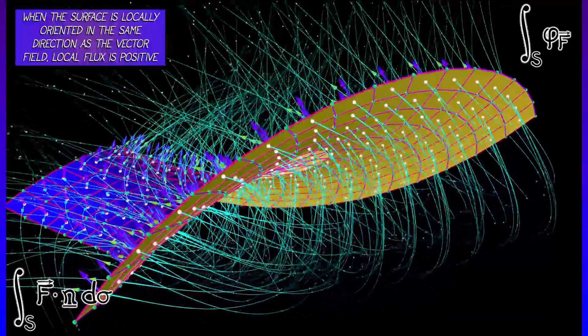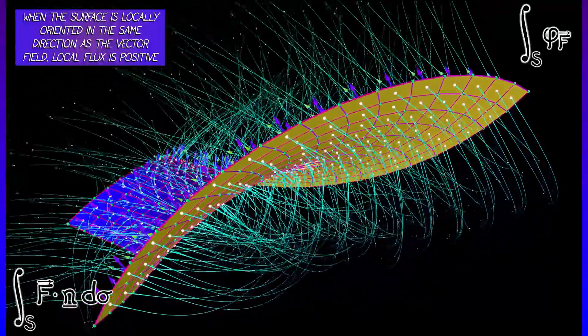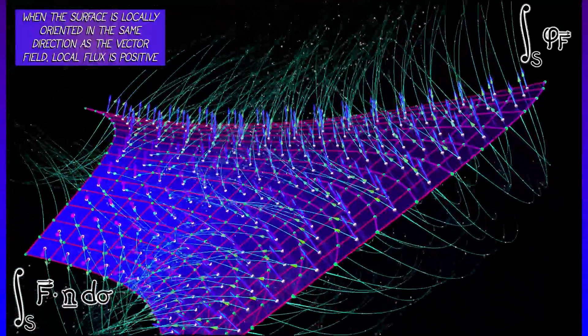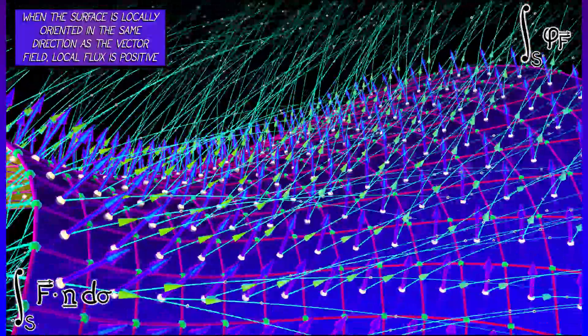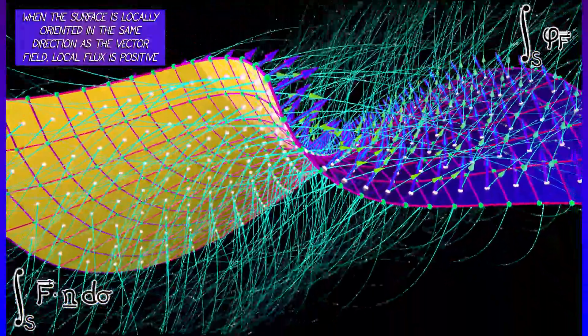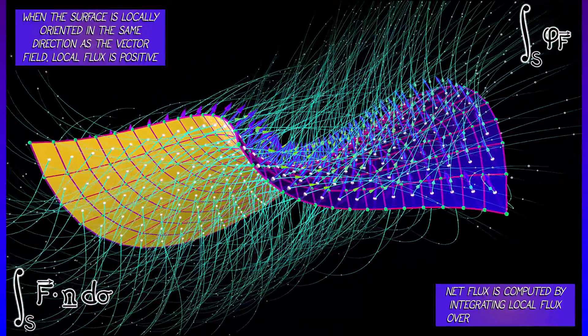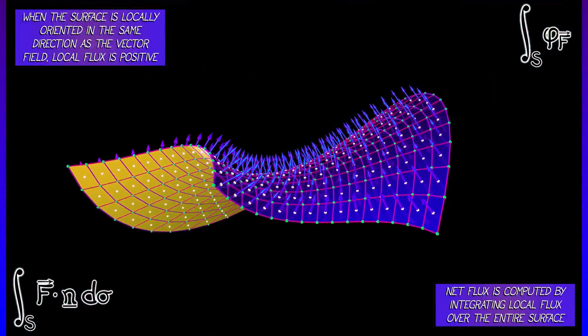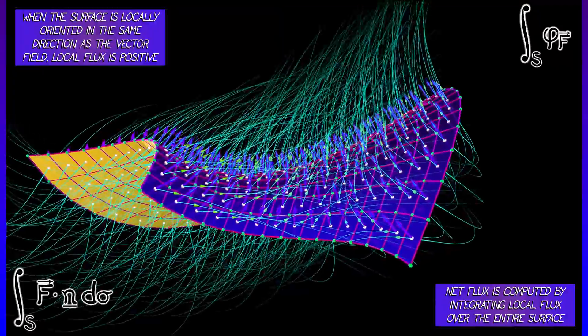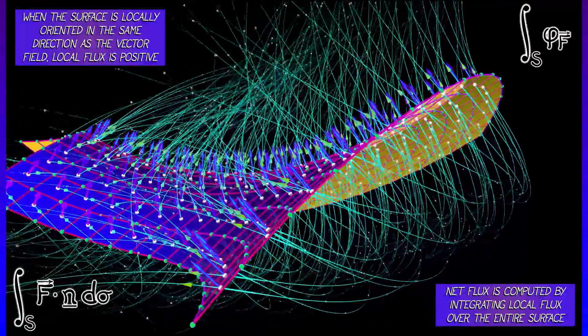You got to keep track of orientations. If the vector field is flowing in the same direction as the orientation of the surface, that's positive flux. Otherwise, it's negative. If you can think about this at the infinitesimal level and then use what we know about integration to add up these local fluxes across every point of the surface, then you get net flux.